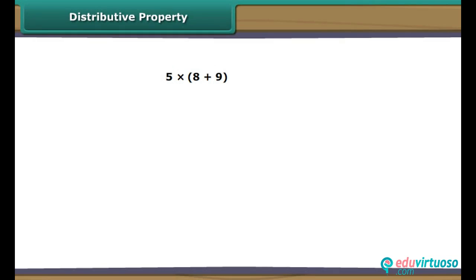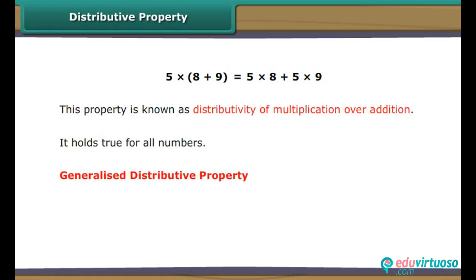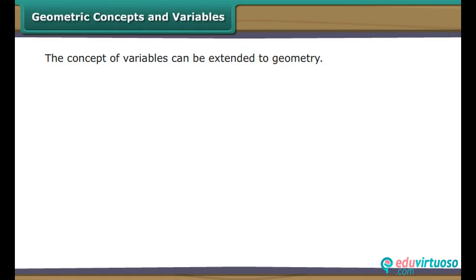Distributive property: look at this expression, 5 into (A plus 9). It can also be written as 5 into 8 plus 5 into 9. This property is known as distributivity of multiplication over addition. It holds true for all numbers. We generalize: (A plus B) into C is equal to A into C plus B into C.